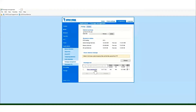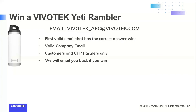I hope you enjoyed the information. If you have any questions, feel free to send us an email at VivoTech_AEC@vivotech.com or visit our website. Thank you for sticking around to the end — you have a chance to win a 20 ounce Yeti Rambler. The first valid email with the correct answer wins. Valid company emails only, customers and CPP partners only, and we will email you back if you win.